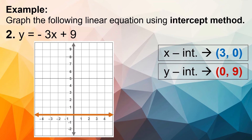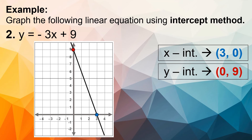Now let's graph. For the x-intercept, we look at the x-axis. Since we have coordinates 3 and 0, we locate positive 3 on the x-axis. For the y-intercept, we look at the y-axis. Since we have coordinates 0 and 9, we locate positive 9 on the y-axis. Since we already have 2 points, we may now draw a line. This will be the line of our linear equation.